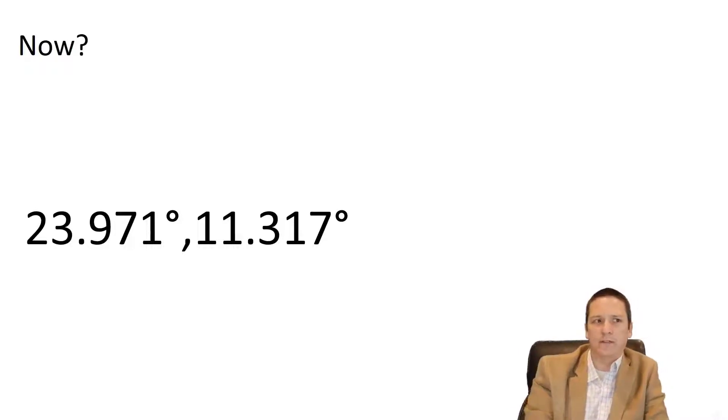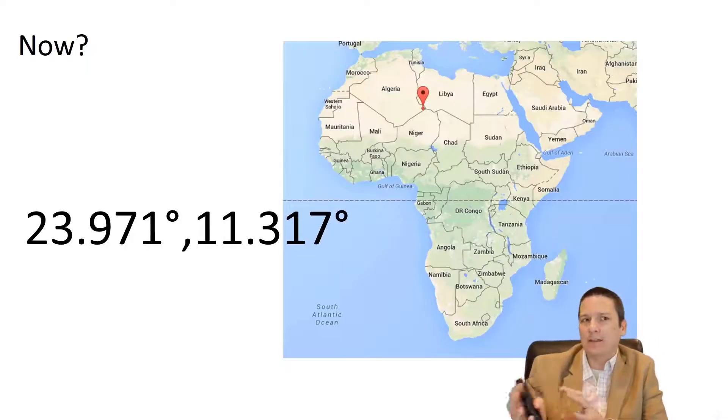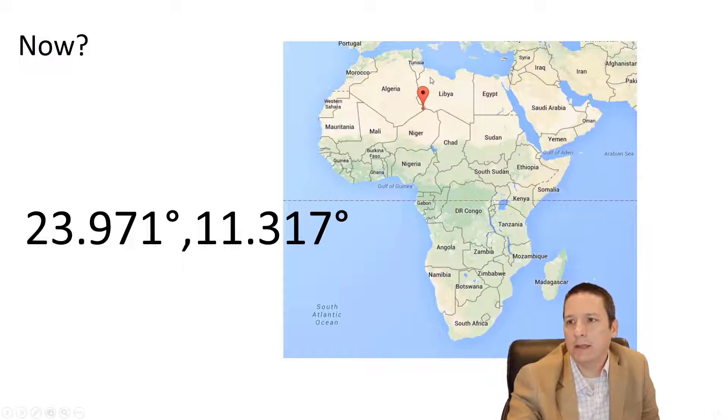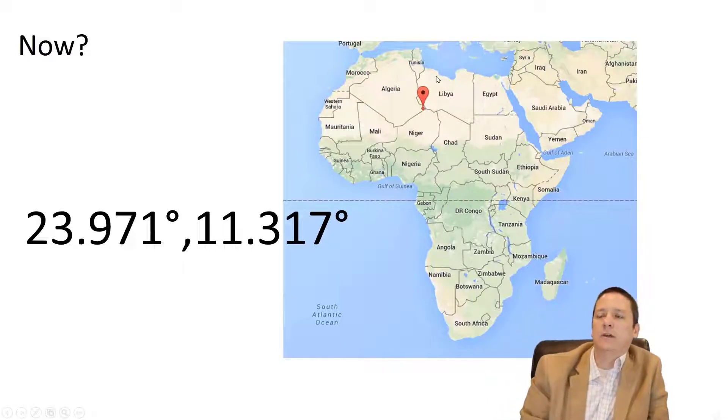So now that data, this number 239-711-1317, doesn't represent a phone number in southern Florida. It represents this point in Africa.